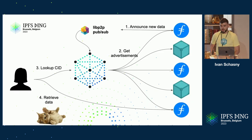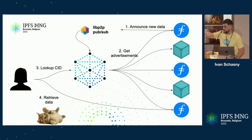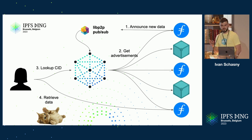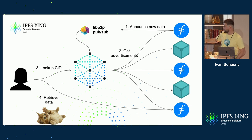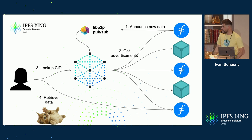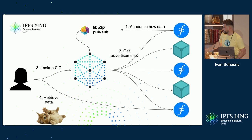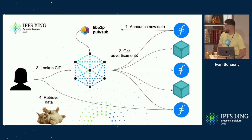To recap how data gets into IPNI — that happens in four simple steps. Step one: storage providers, when they have new data, announce it onto a libp2p pubsub topic. IPNI listens to this pubsub and when it sees a new advertisement of content being available, it reaches out to that storage provider directly and fetches the new advertisements — that's essentially the write path. On the lookup path, when a user wants to find something, they send a request to IPNI with a CID or multihash. IPNI returns a bunch of providers where the data can be fetched from, and then the user goes and fetches the content from the provider of their choice.